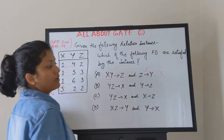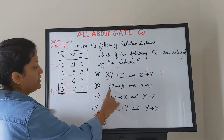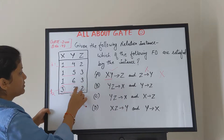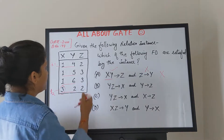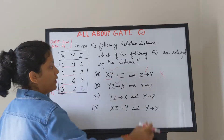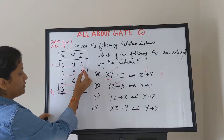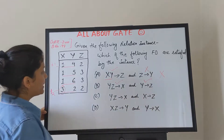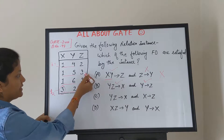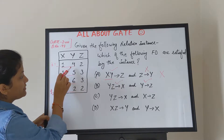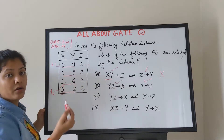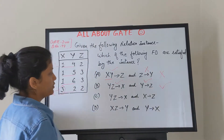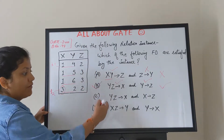Since Z → Y is not satisfied, option A is eliminated. Let's check option B: YZ → X and Y → Z. For YZ → X, all YZ pairs — (4,2), (5,3), (6,3), (2,2) — are distinct, so it is true. For Y → Z: values 4→2, 5→3, 6→2, 2→2 — all Y values are distinct, so Y → Z is also true. Both are satisfied, so option B looks correct.